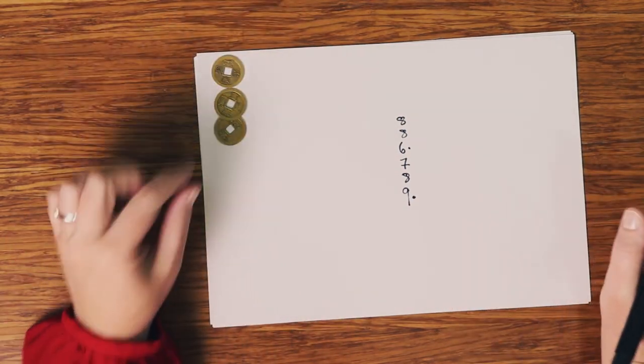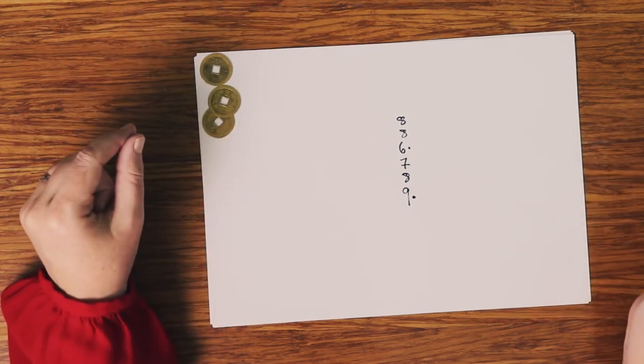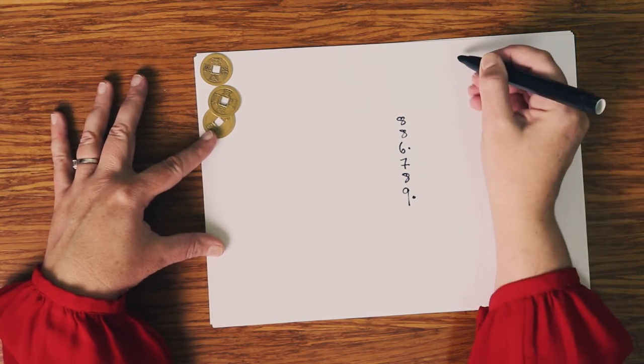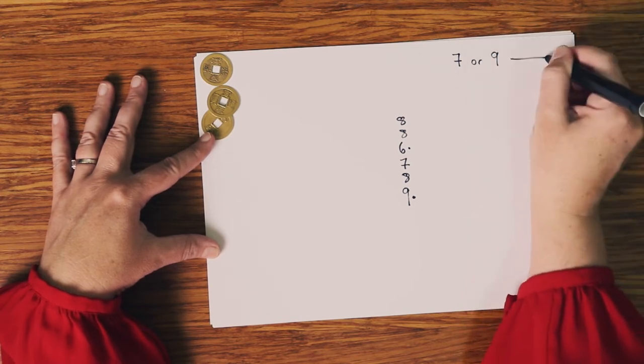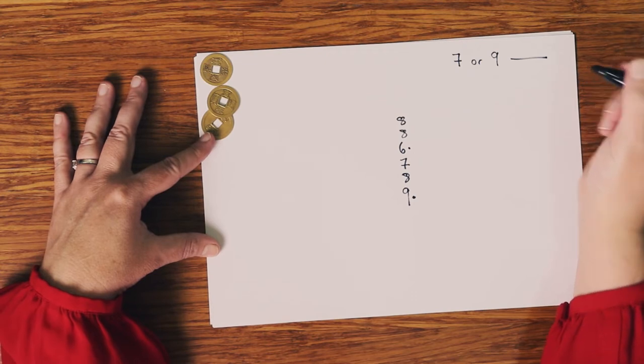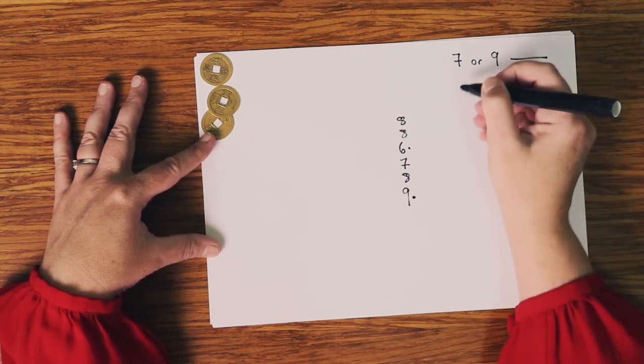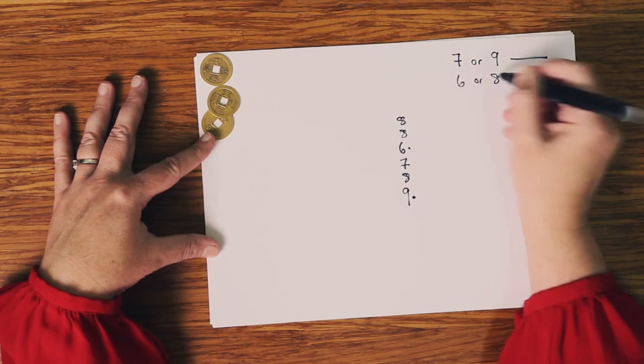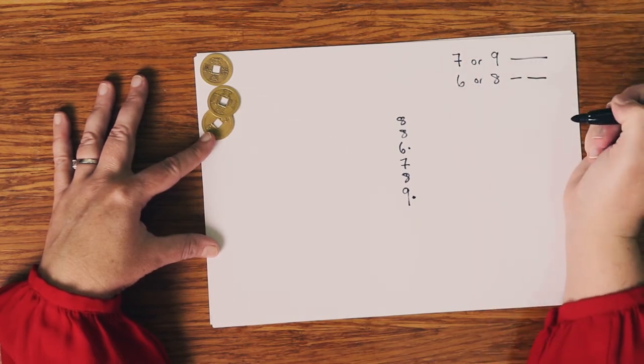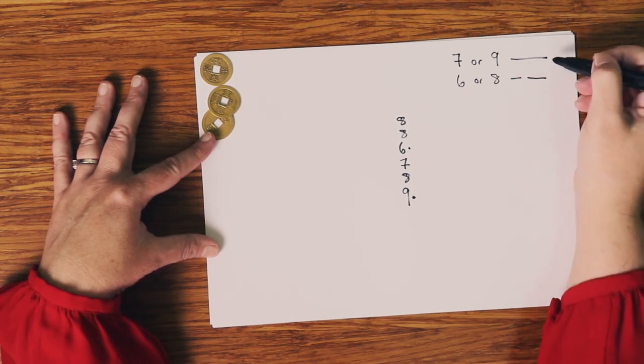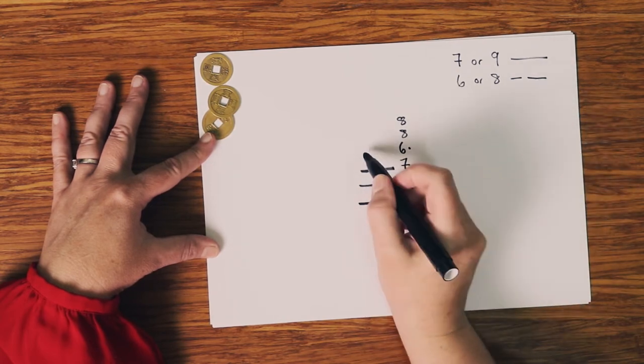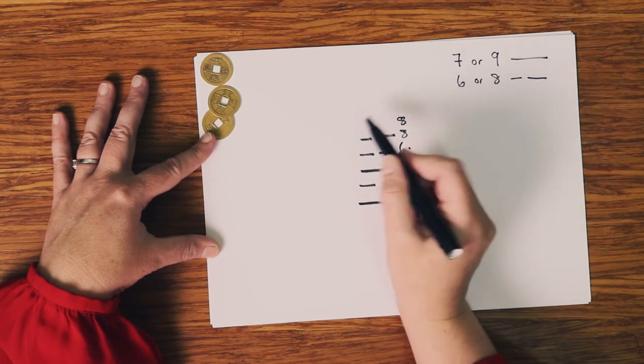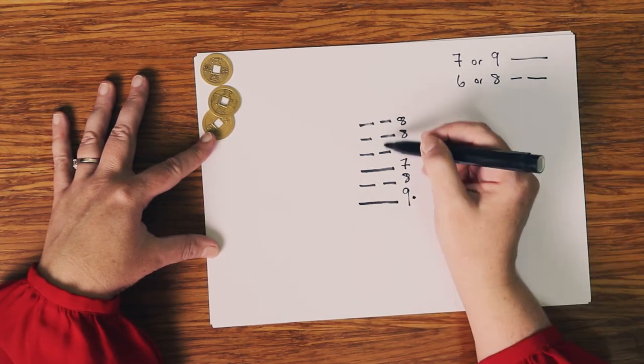So there we have our main hexagram. It looks like a whole lot of numbers in a column but let's start drawing in the lines. Where we have a seven or a nine, we have a male yang line, also known as an unbroken line. And when we have a six or an eight, we have a female line, also known as a broken line. So nine is yang, eight is yin, seven is yang, six is yin, eight is yin, eight is yin. So here we have our lines drawn up.